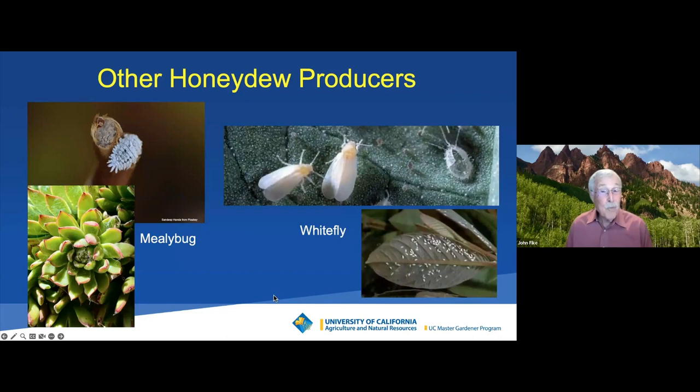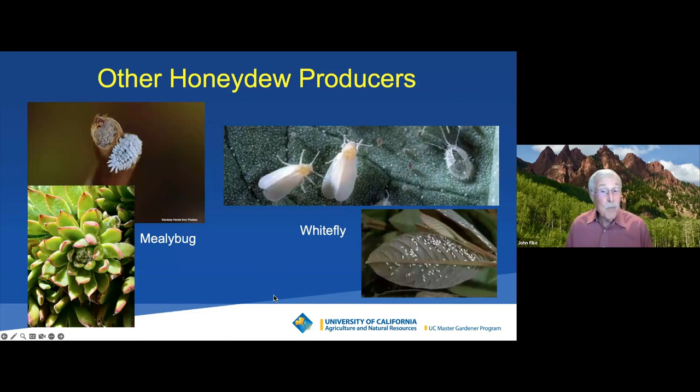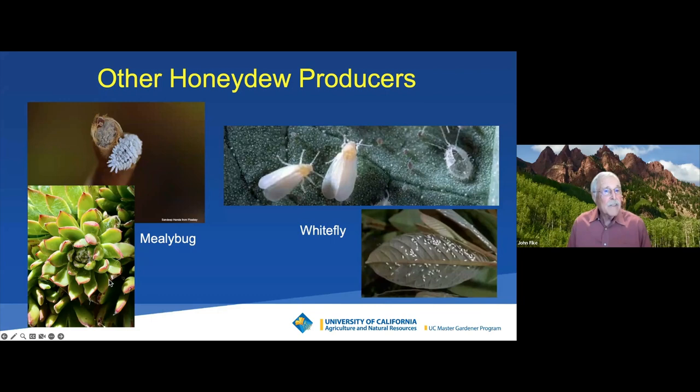There are other honeydew producers — one is called a mealybug. Mealybugs get into all sorts of plants. They're particularly nasty on grapes and they seem to have an adverse effect on succulents. You can see this kind of webby, nasty-looking stuff on an Echeveria — that's indicative of mealybugs. They get deep into the rosettes and are very difficult to get rid of. They suck the juices out of the plant, just like the other bugs I've talked about.